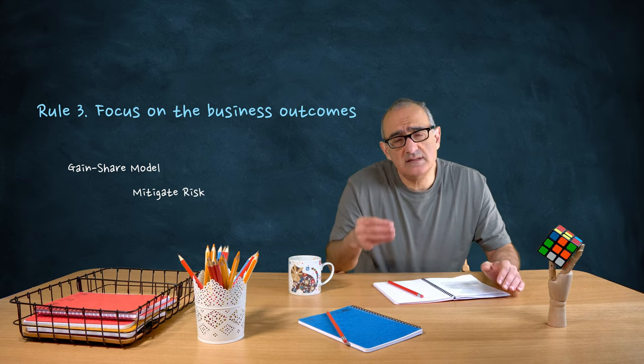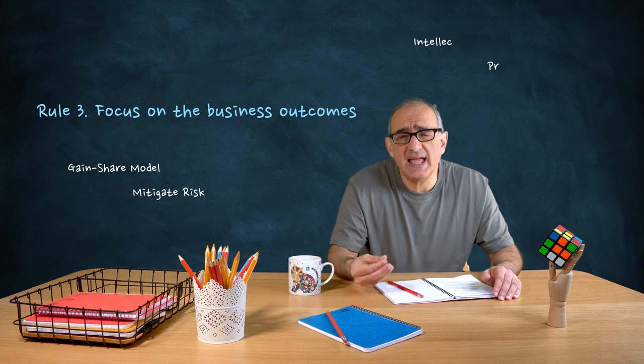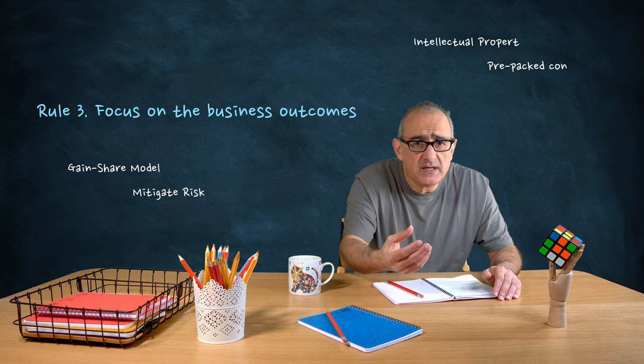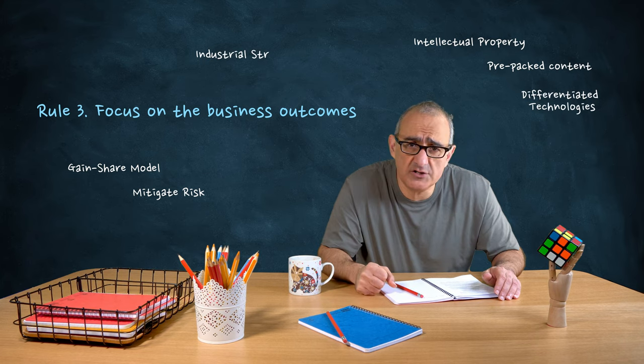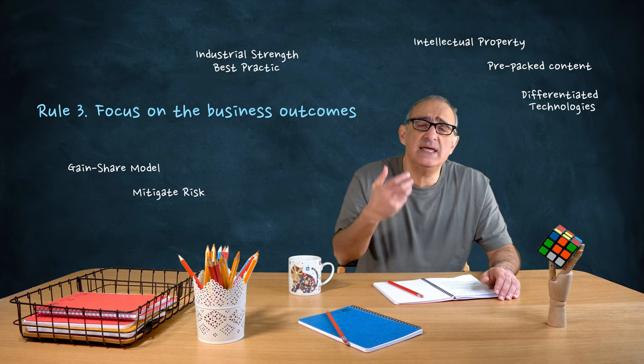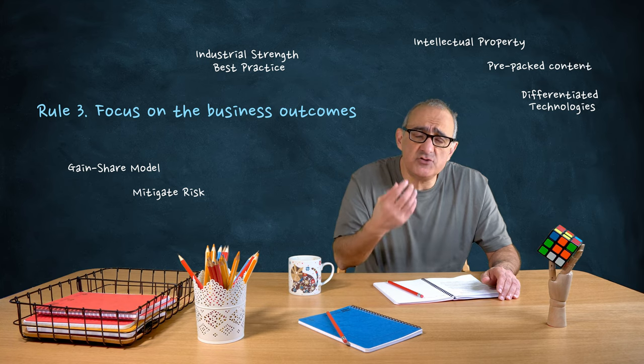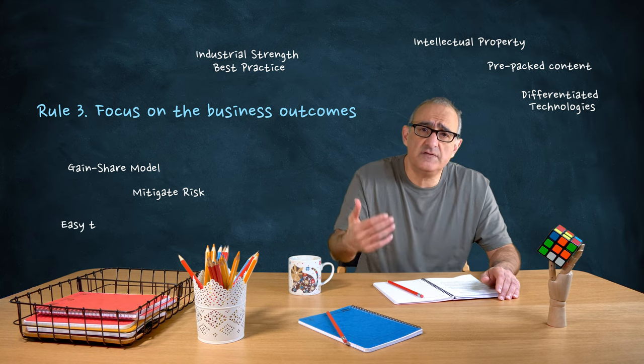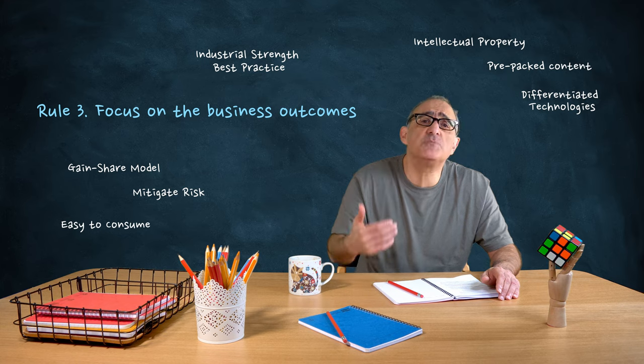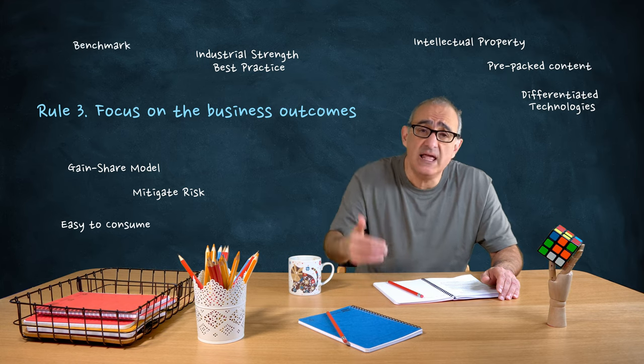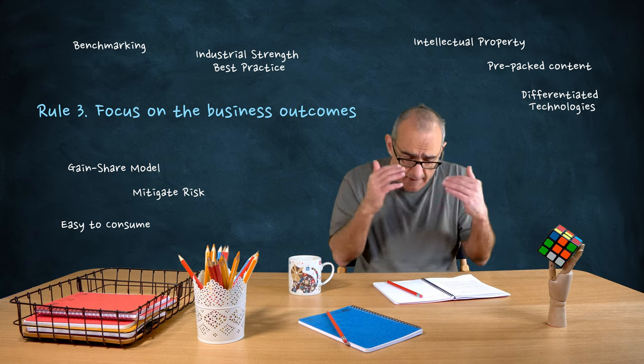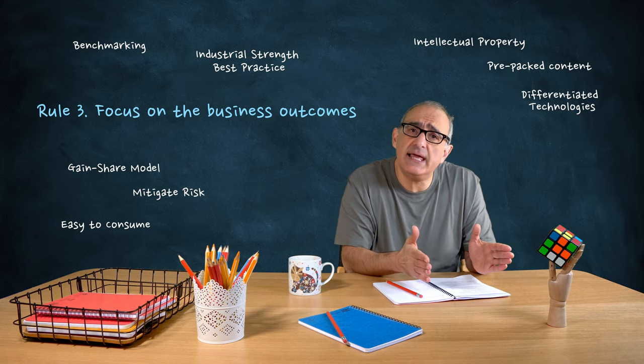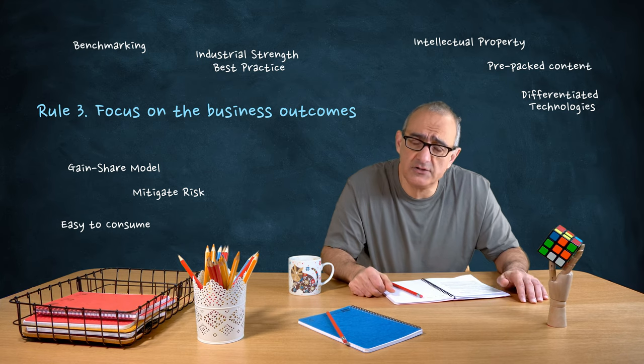The capabilities that the partner is providing has to include IP, has to include content, has to include differential technologies, and has to include certain capabilities that truly accelerate the delivery of these outcomes and the benchmarking of the outcomes. So when you get to the end of the journey or certain milestones in the journey, you can look back and go, I've done this, has that actually helped me? And am I still on track?